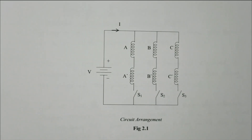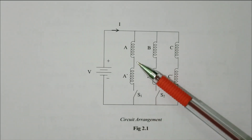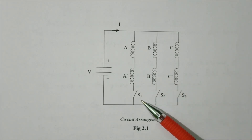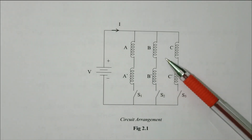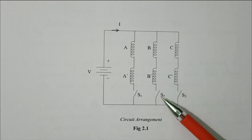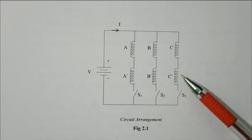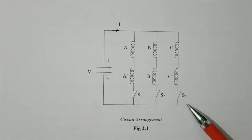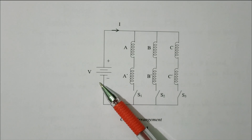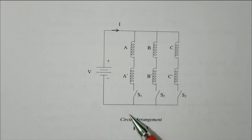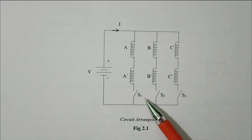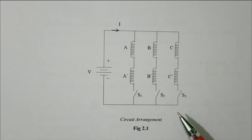This is the circuit arrangement. a/a-dash connected in series is controlled by switch S1. b/b-dash connected in series controlled by switch S2. c/c-dash connected in series controlled by S3. It is excited by the DC supply. We can control the excitation using switches S1, S2, S3.